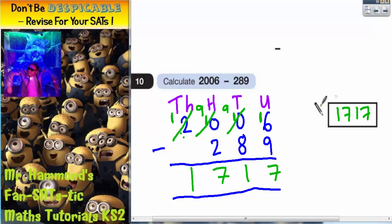A quick way of checking that would be to do an addition. Start with your answer, one thousand seven hundred and seventeen, and add the two hundred and eighty nine back on. Let's see if we do actually get two thousand and six. If we do, we know we've got it right. Seven add nine is sixteen, carry the one.